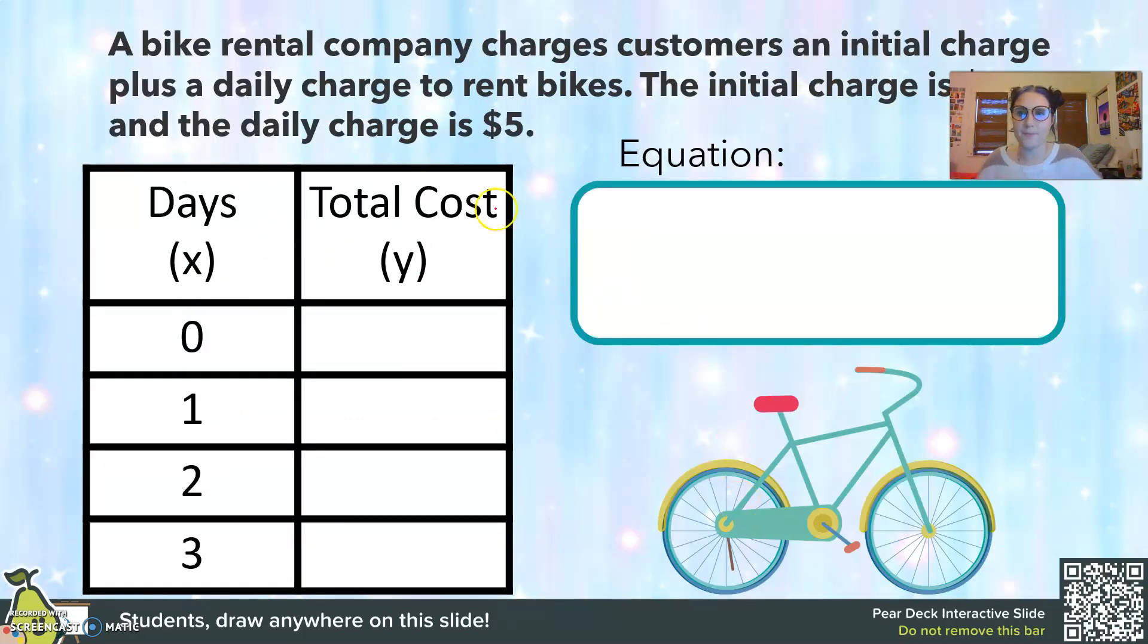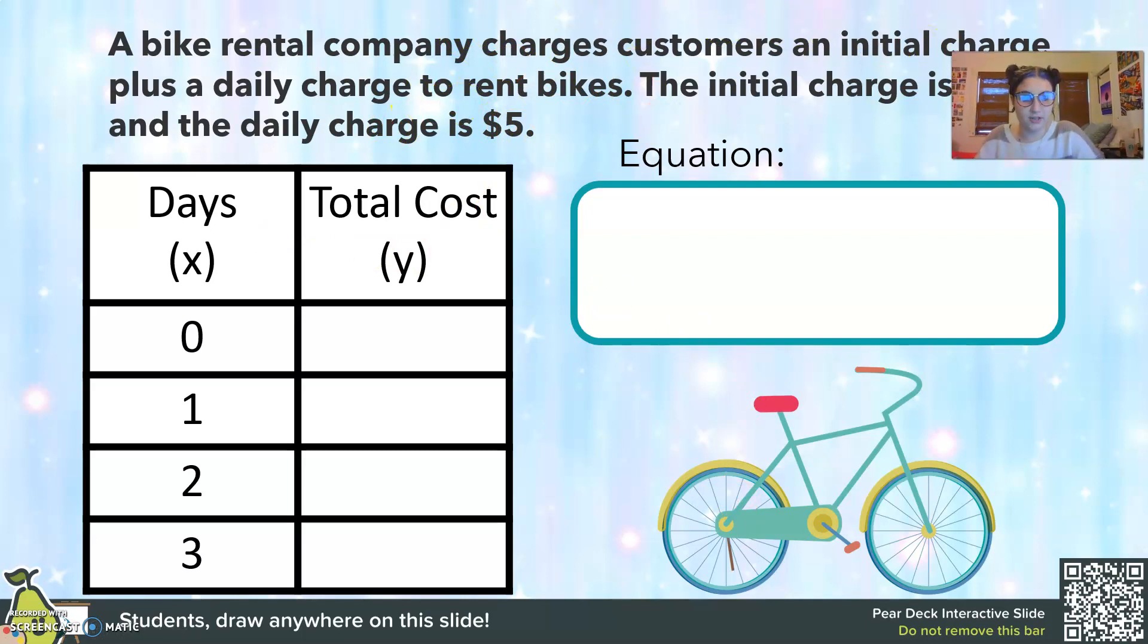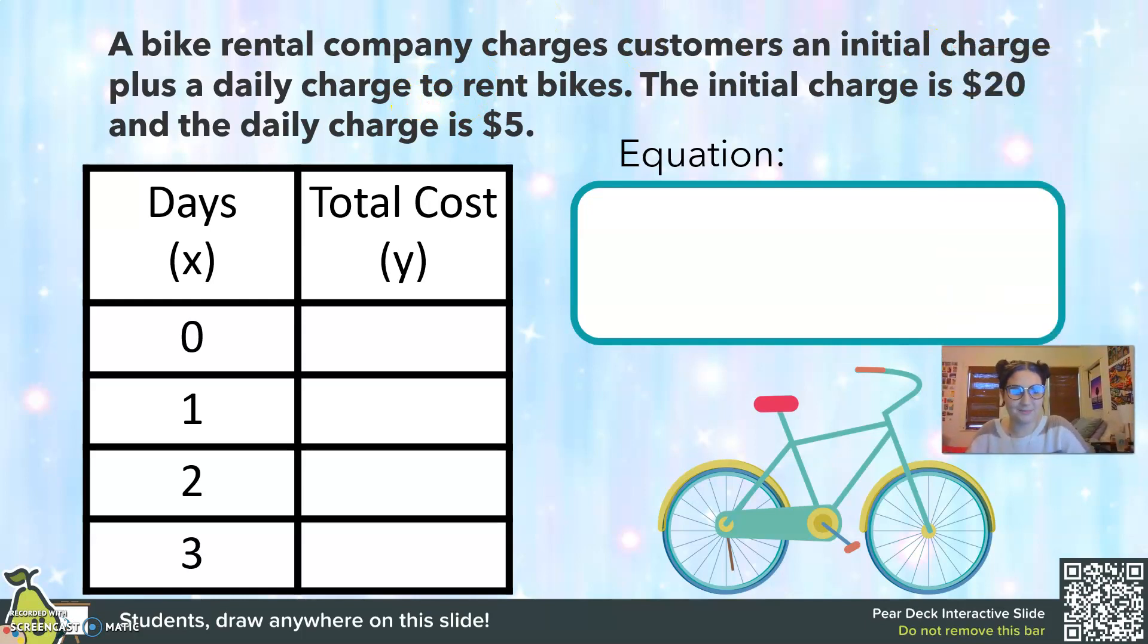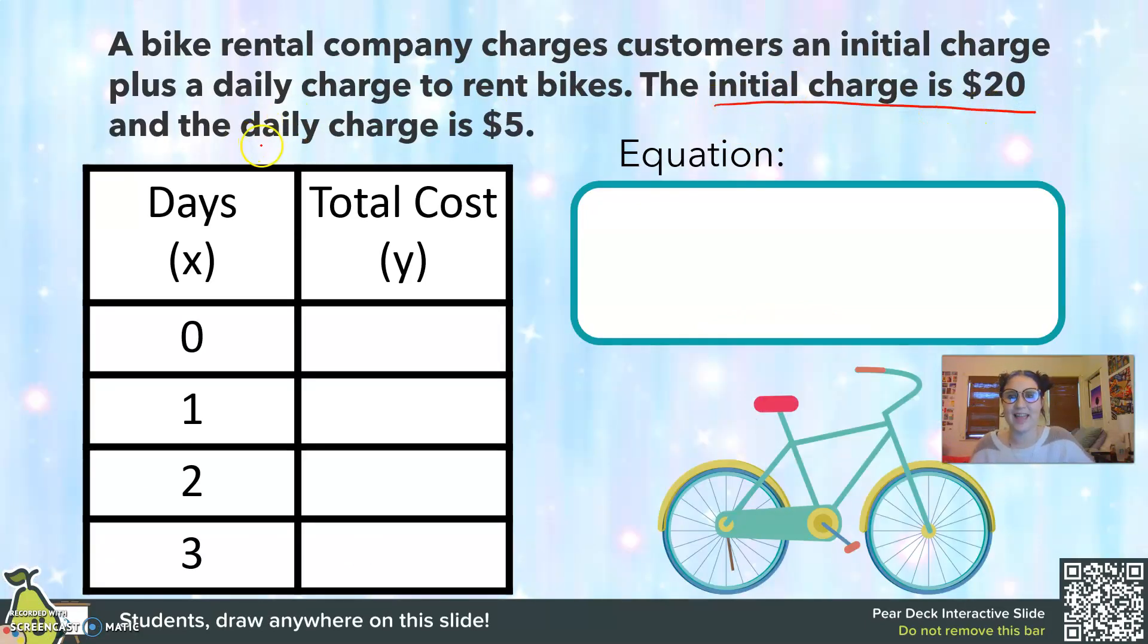Alright, another problem. A bike rental company charges customers an initial charge plus a daily charge to rent bikes. The initial charge is $20. And the daily charge is $5. So after zero days, I have to pay that initial charge first. So my initial charge is going to be $20. Because I have to pay that first before I can start riding my bike.